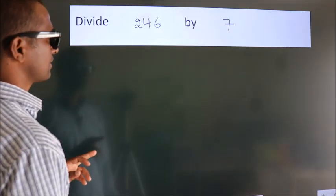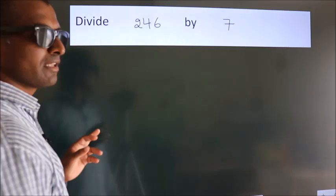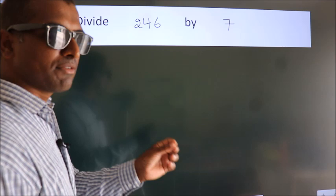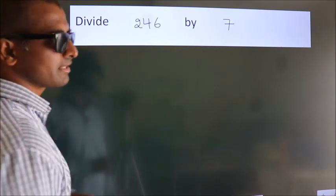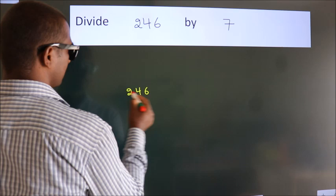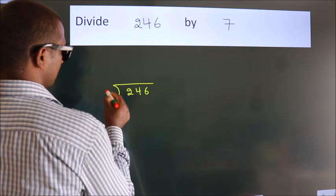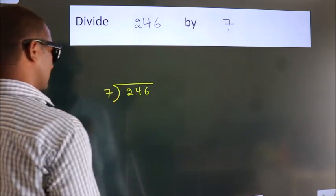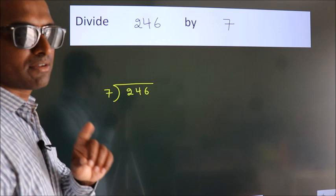Divide 246 by 7. To do this division, we should frame it in this way. 246 here, 7 here. This is your step 1.